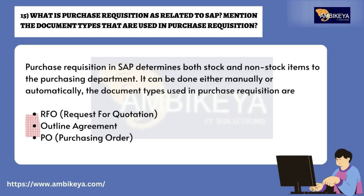Question number fifteen: what is a purchase requisition as related to SAP, and what are the document types used in purchase requisition? A purchase requisition in SAP determines both stock and non-stock items to the purchasing department. It can be done either manually or automatically. The document types used in purchase requisition are: RFQ (Request for Quotation), Outline Agreement, and PO (Purchase Order).